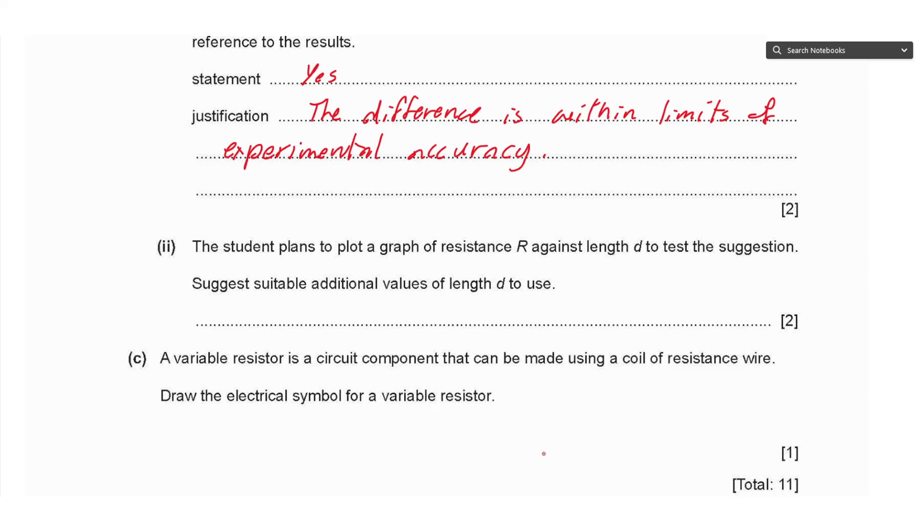Part ii says the student plans to plot a graph of resistance r against the length d to test the suggestion. Suggest suitable additional values for length d to use. We already had 50 and 75, we can add 55, 60, 65, 70—so we have five values or more. We can write them as .0 to have the same precision as the question, and the unit is centimeters.